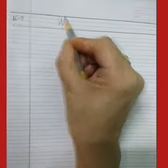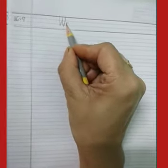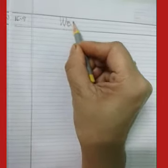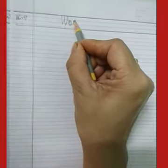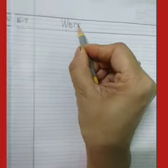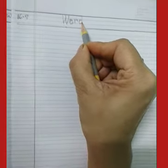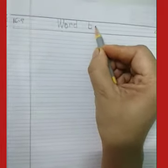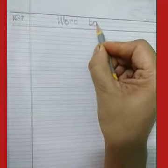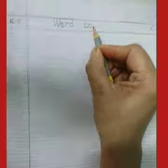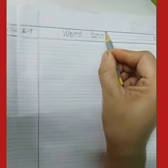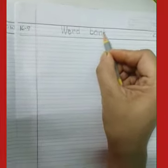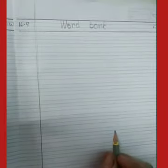Then write W, O, R, D — word. B, A, N, K — bank. Word bank.